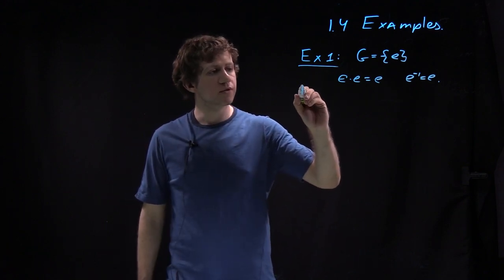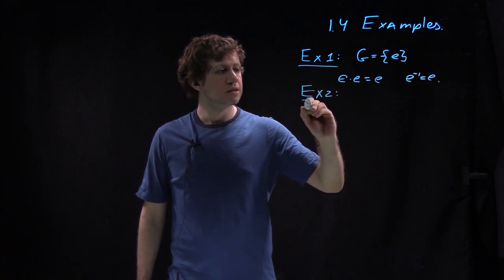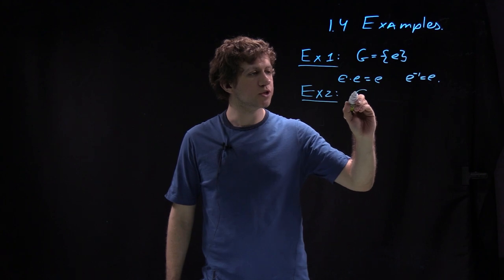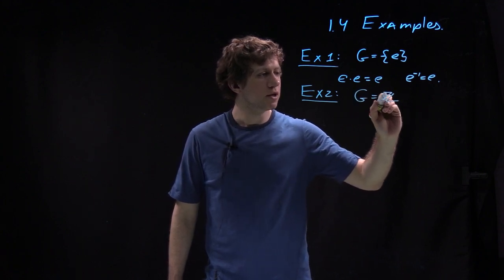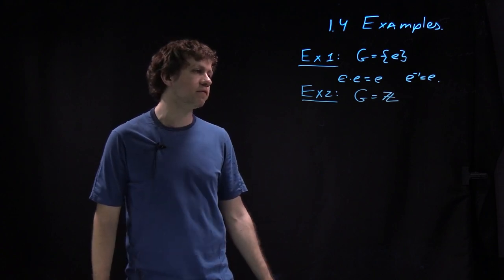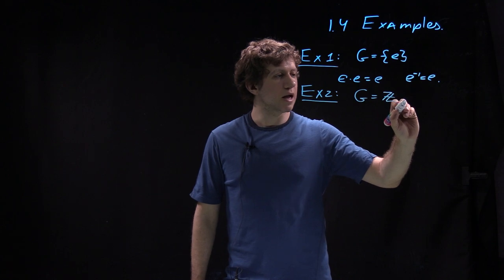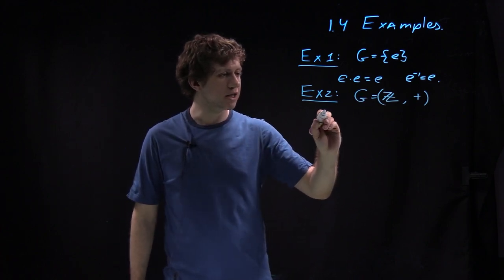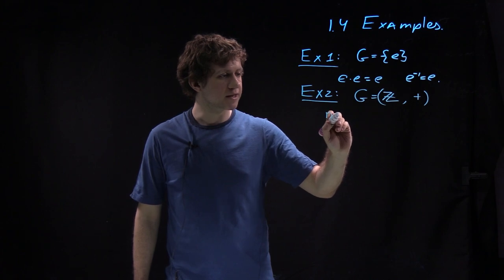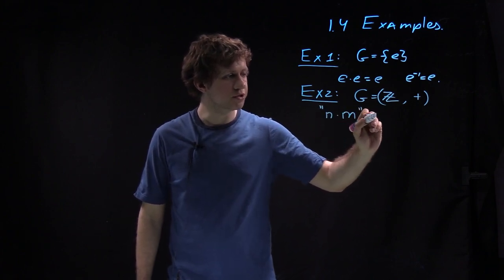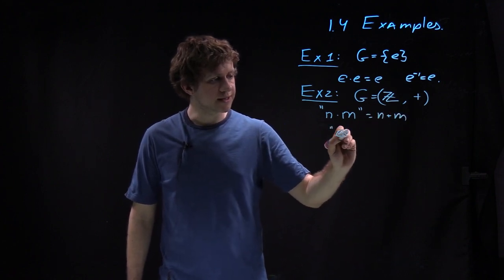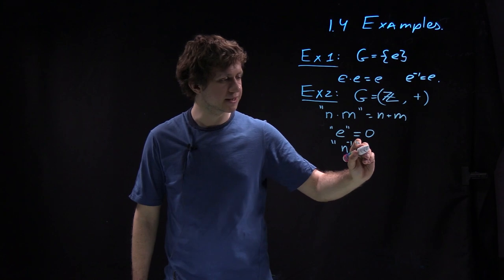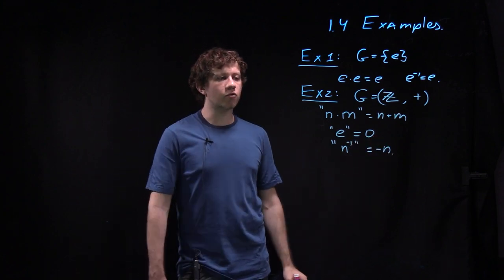So the next example is somewhat strange at first. One of the simplest groups, and the most important, is just a group of integers. And you can say, but how so? When you multiply integers, you don't have inverses. Fractions are not there. But the operation is addition here. So what it means, it means that when you multiply the element n times m in a group theory sense, is just n plus m. This identity or unit element is zero, and n inverse in group sense is minus n.